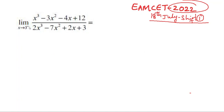Limit x tends to 3: (x³ - 3x² - 4x + 12) / (2x³ - 7x² + 2x + 3) equals dash. Substituting x = 3, this is in the form 0/0.